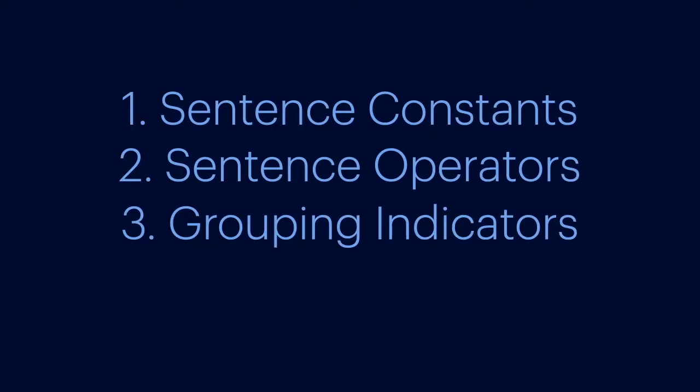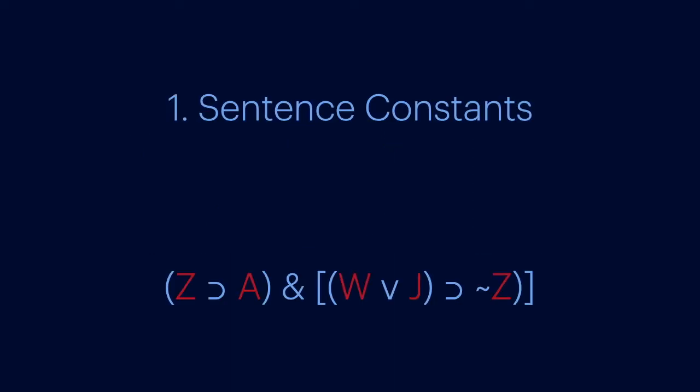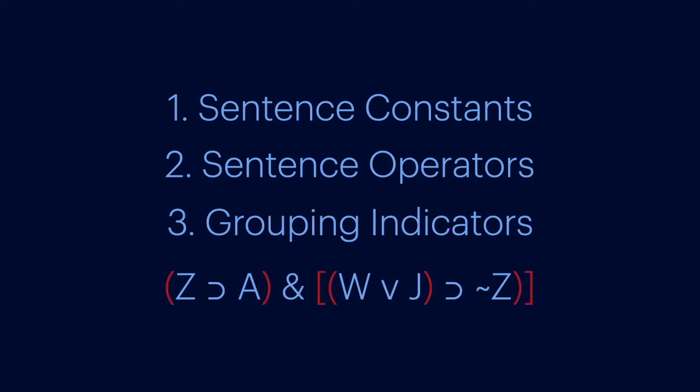Lastly, our formal language has parentheses, braces, and brackets. Students sometimes worry about the differences between them, but it doesn't really matter. These are all just options for grouping when you need to do so. More on grouping later. So that's it. Our formal language is made up of constants, operators, and grouping indicators. Pretty simple, right? Now we just need to know how to put them all together properly.